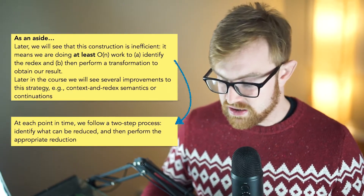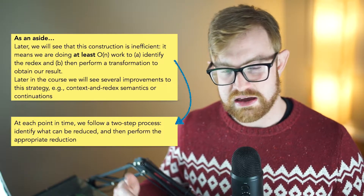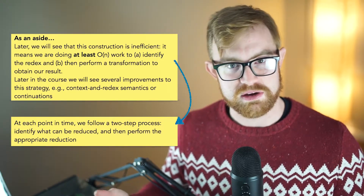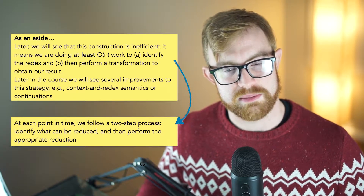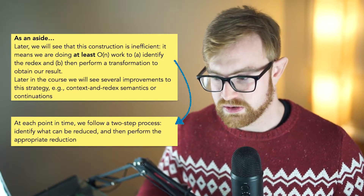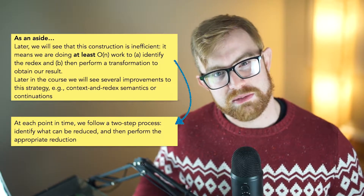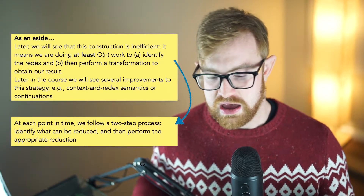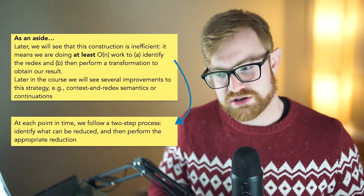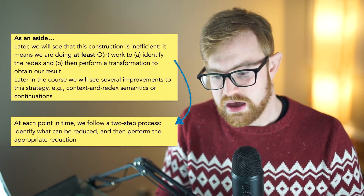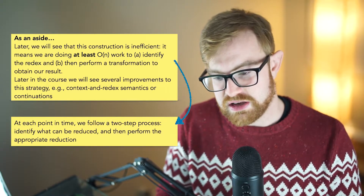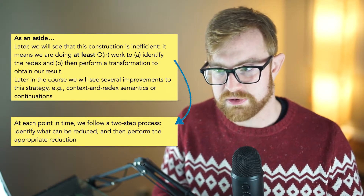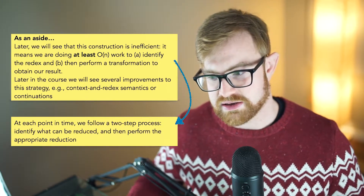And so what that means is if you take n steps of the program's execution, you're going to get n-squared actual cost, assuming that you're traversing different parts of different sub-expressions and things like that. At each point in time, we're following a two-step process: we're identifying what can be reduced, and then we're performing the appropriate reduction. That's what's going to happen in textual reduction semantics.